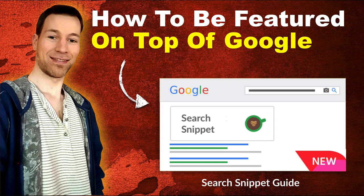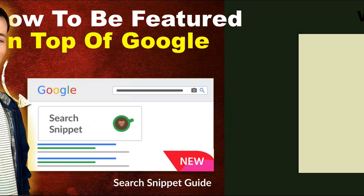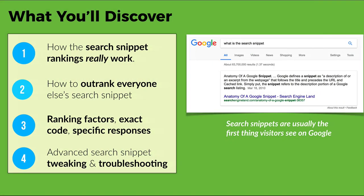Hello and welcome. My name is Eric Lantris and today we're going to be talking about how to be featured on top of Google. Specifically, we're going to focus on how to be featured in the search snippet that Google has on top of most results. We're going to cover how search snippet rankings really work, how to outrank everyone else's search snippet, ranking factors, exact code, specific responses to get your search snippet up there, and advanced search snippet tweaking and troubleshooting. So it's really a complete guide.